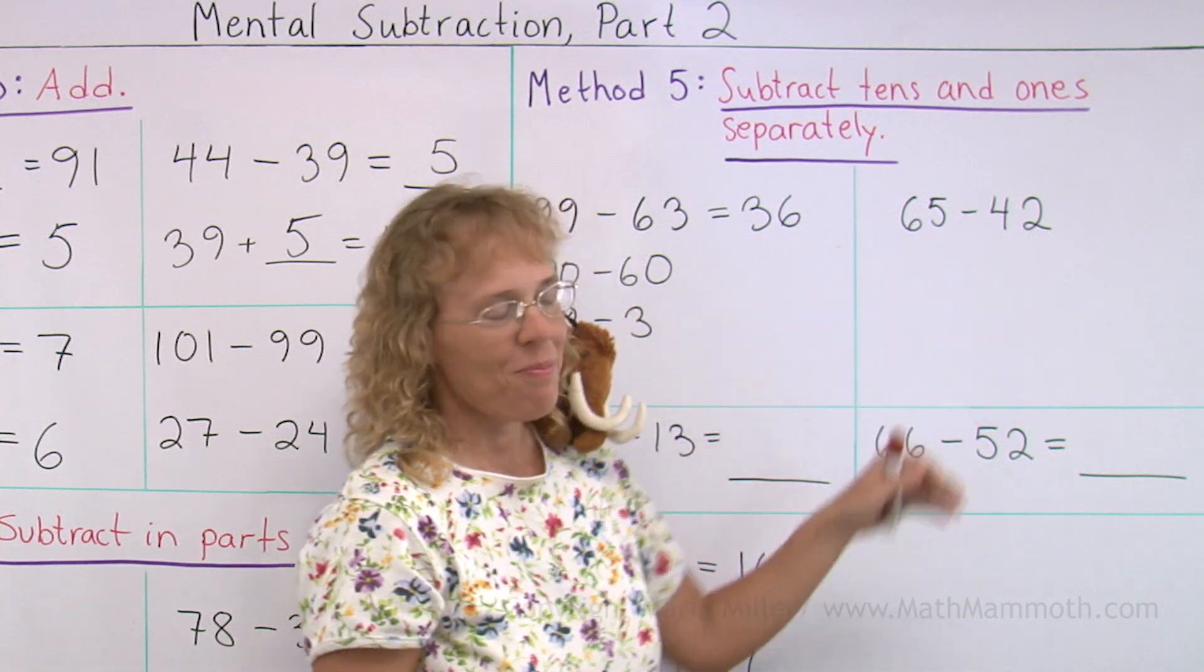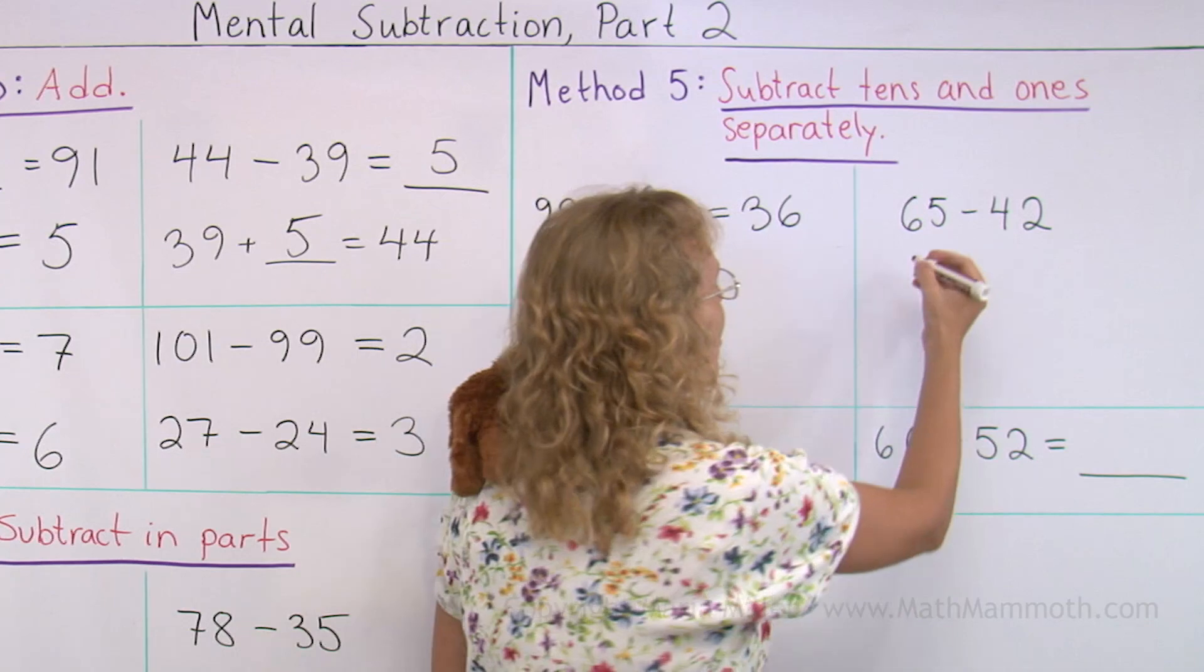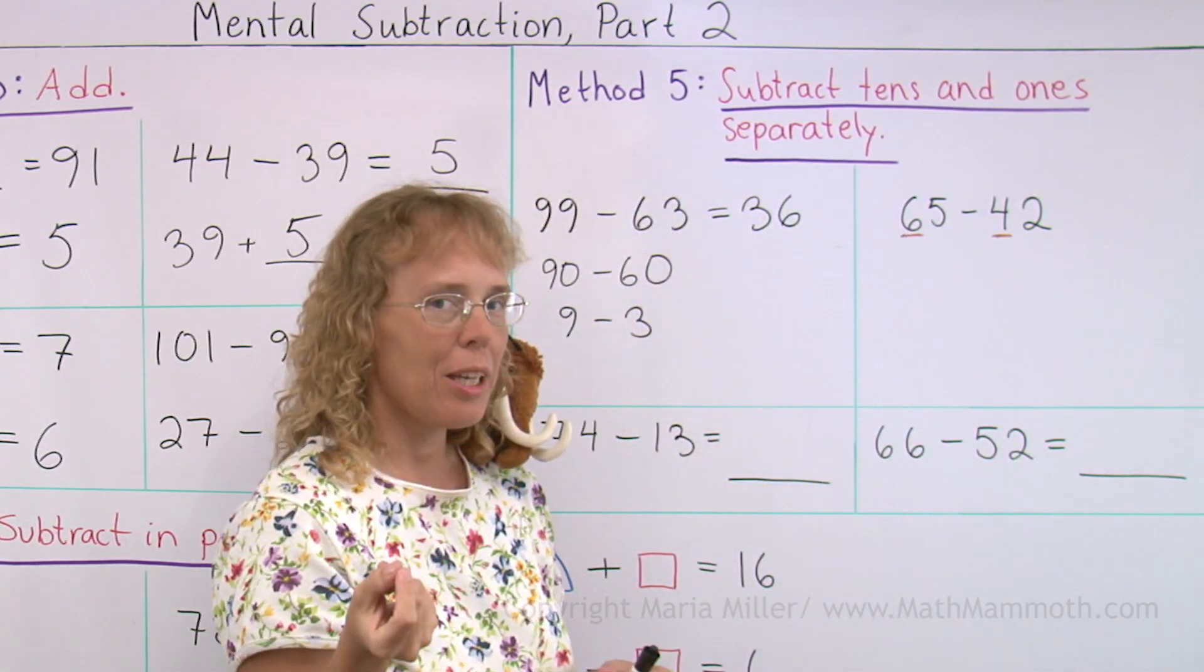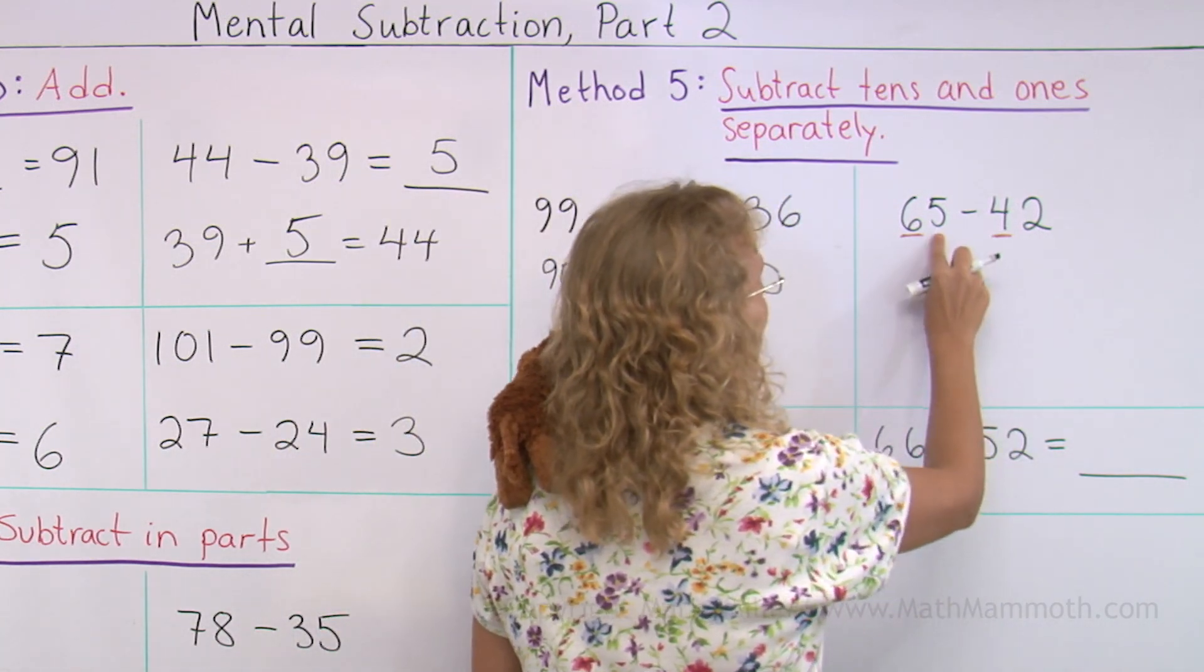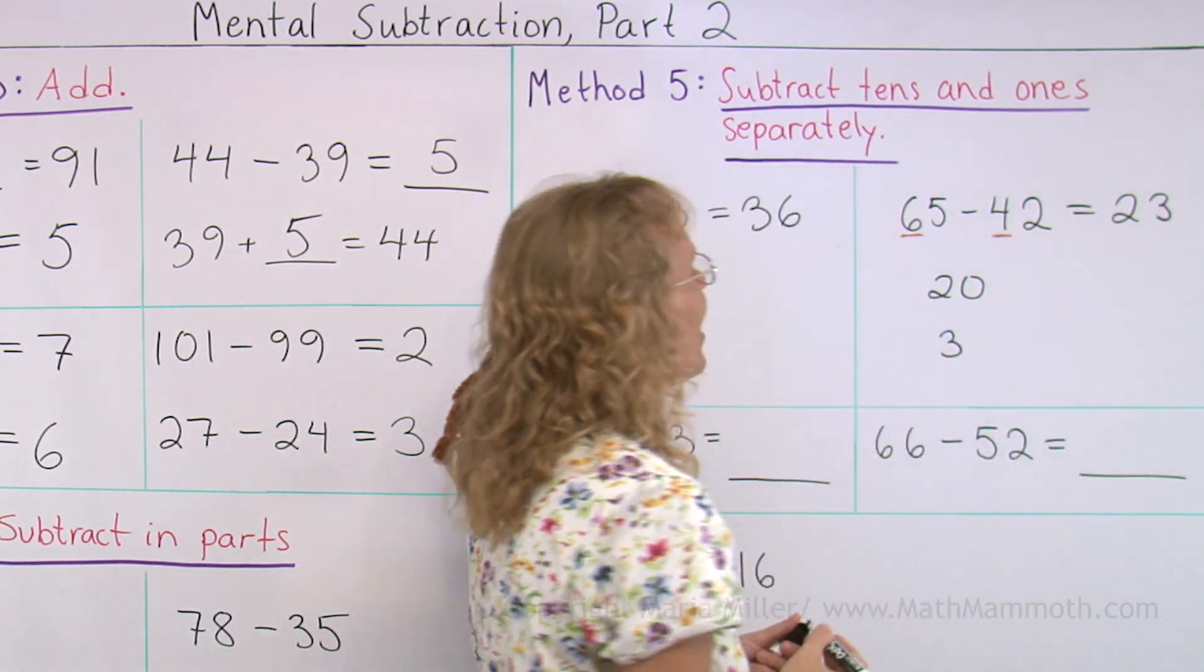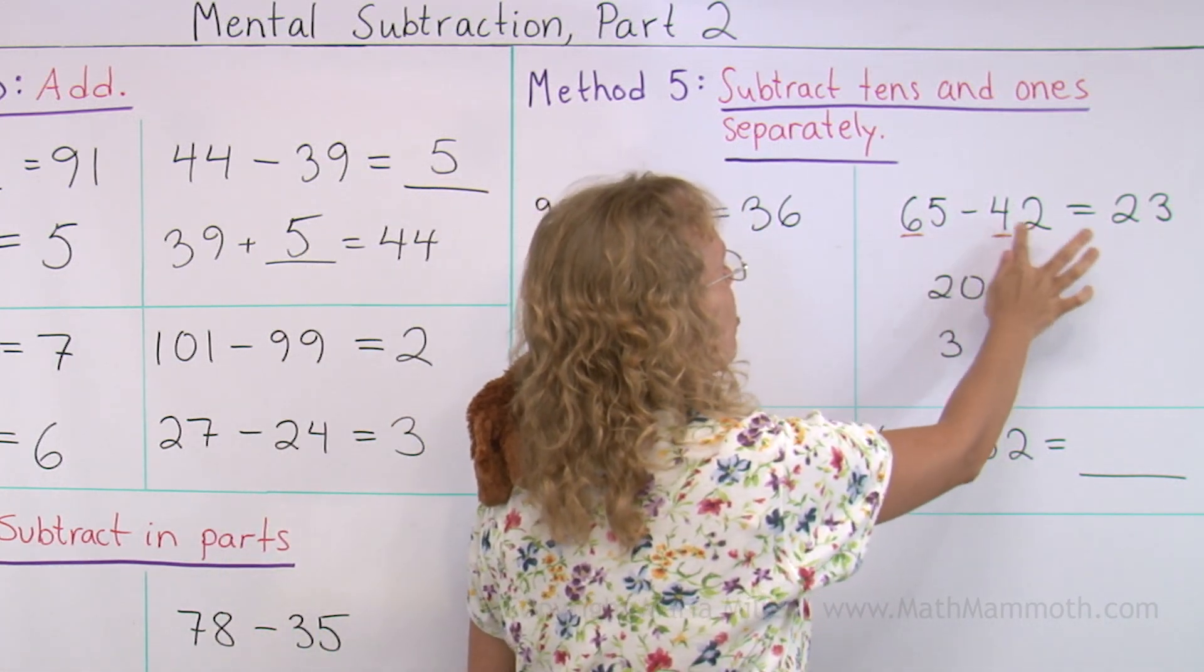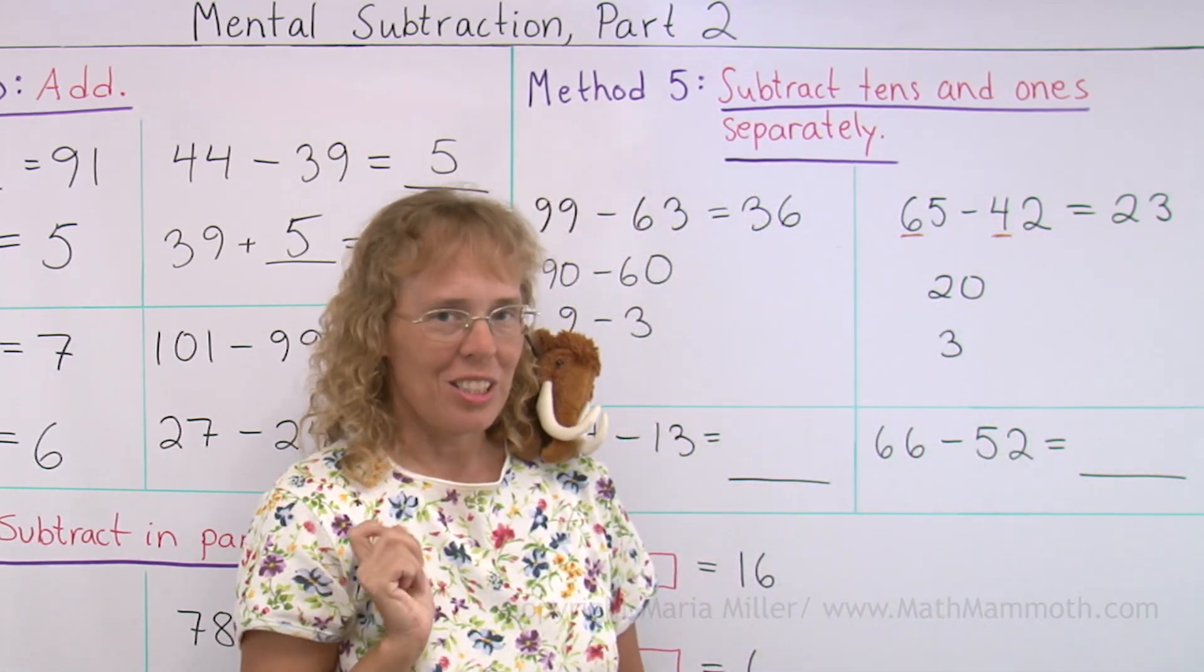Let's try it again. 65 minus 42. Think of the 10s. 60 minus 40. That should be 20. And then 5 minus 2, which is 3. So we get 23. And this method fails if you cannot subtract your 1s, like 5 minus 2. If you had here 5 minus 7, then you could not use this method.